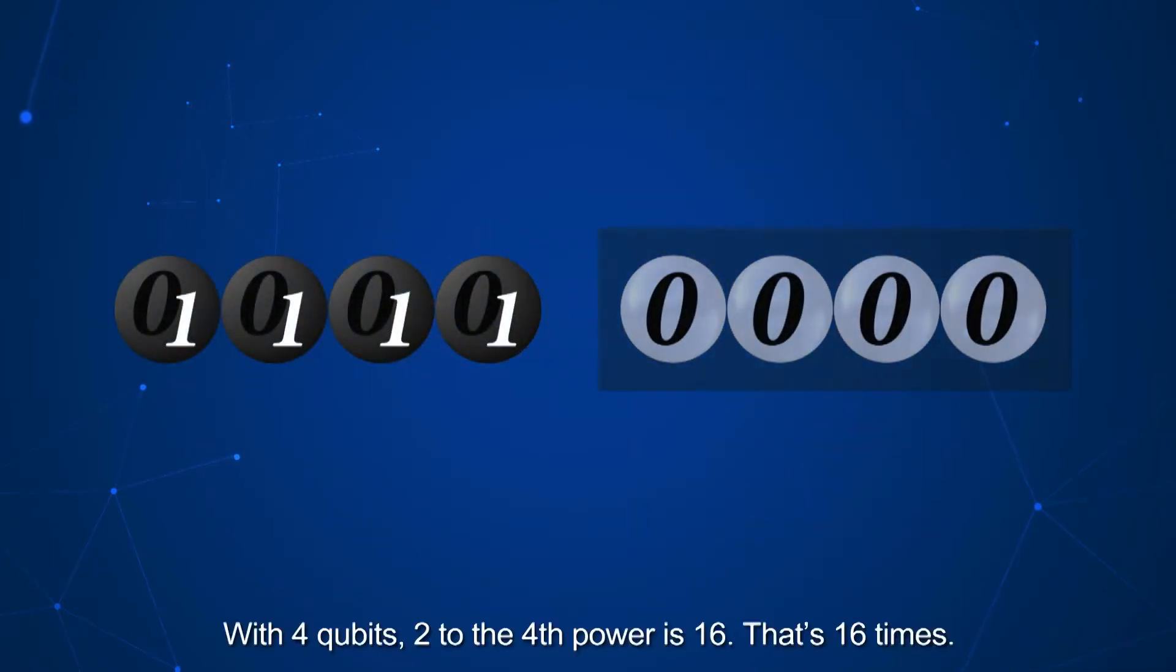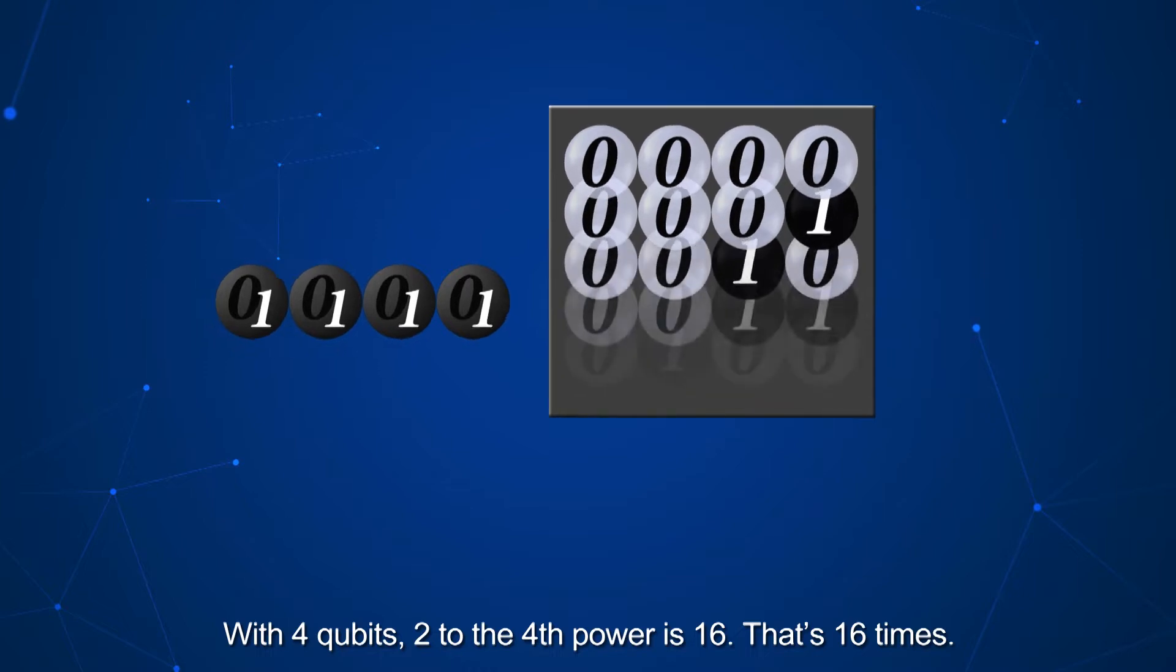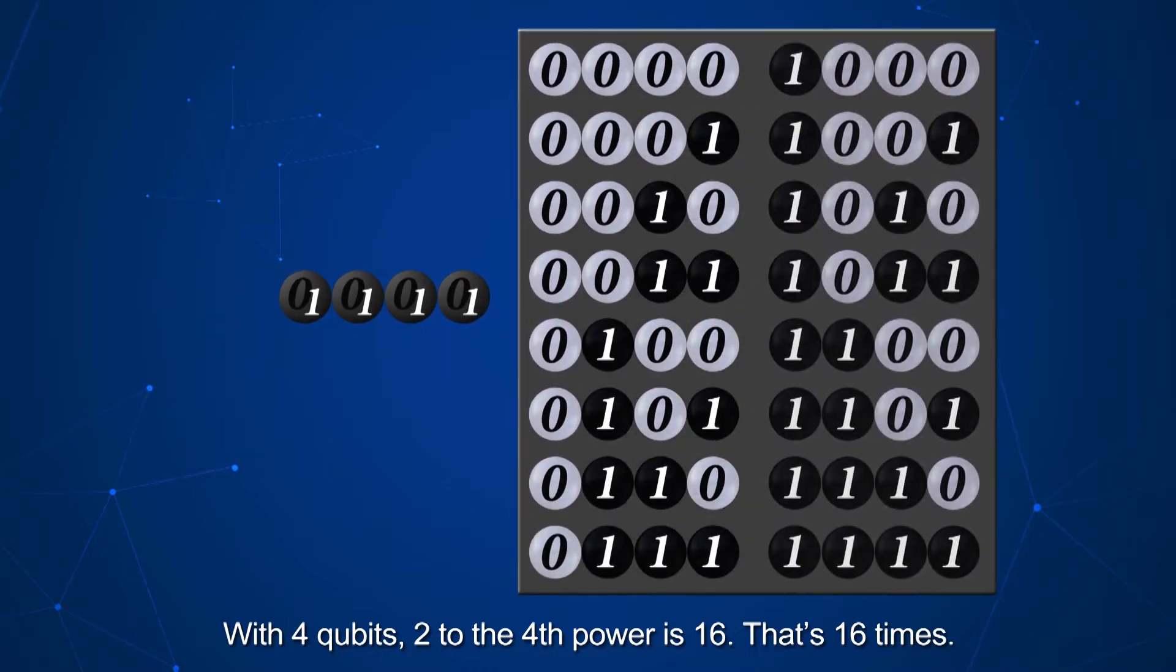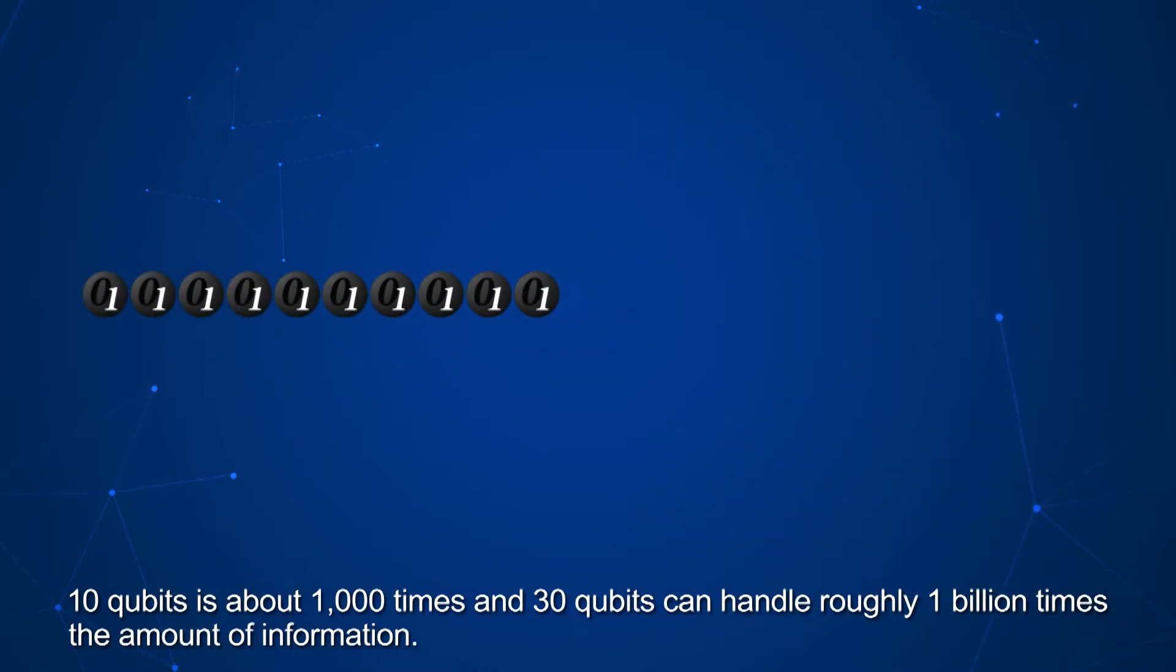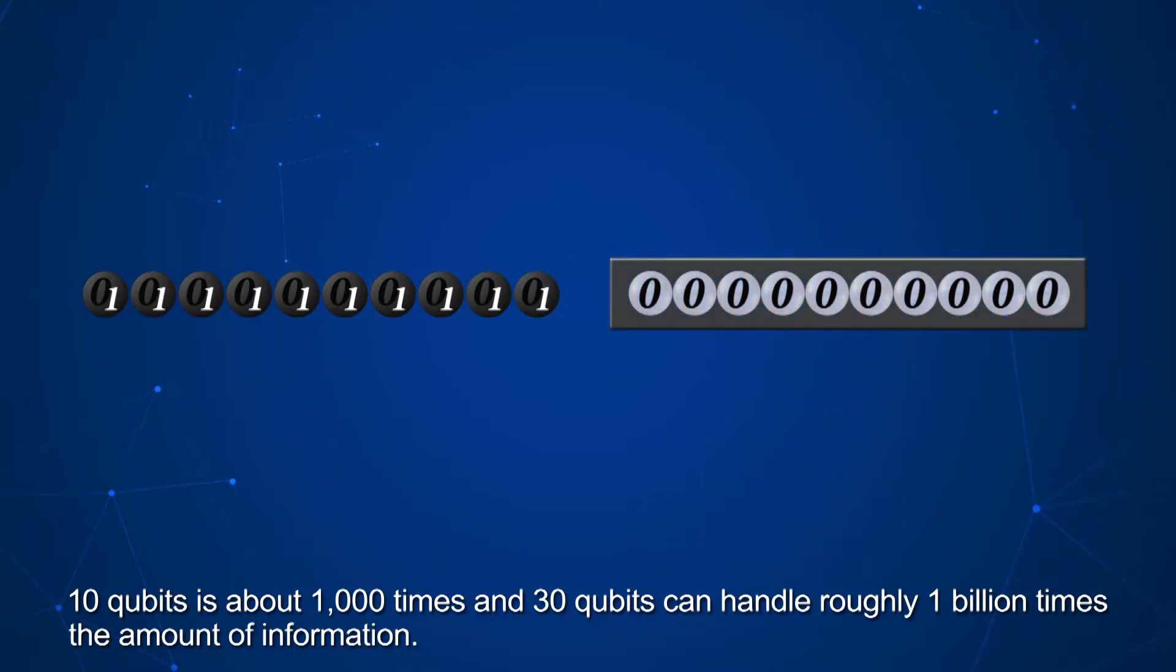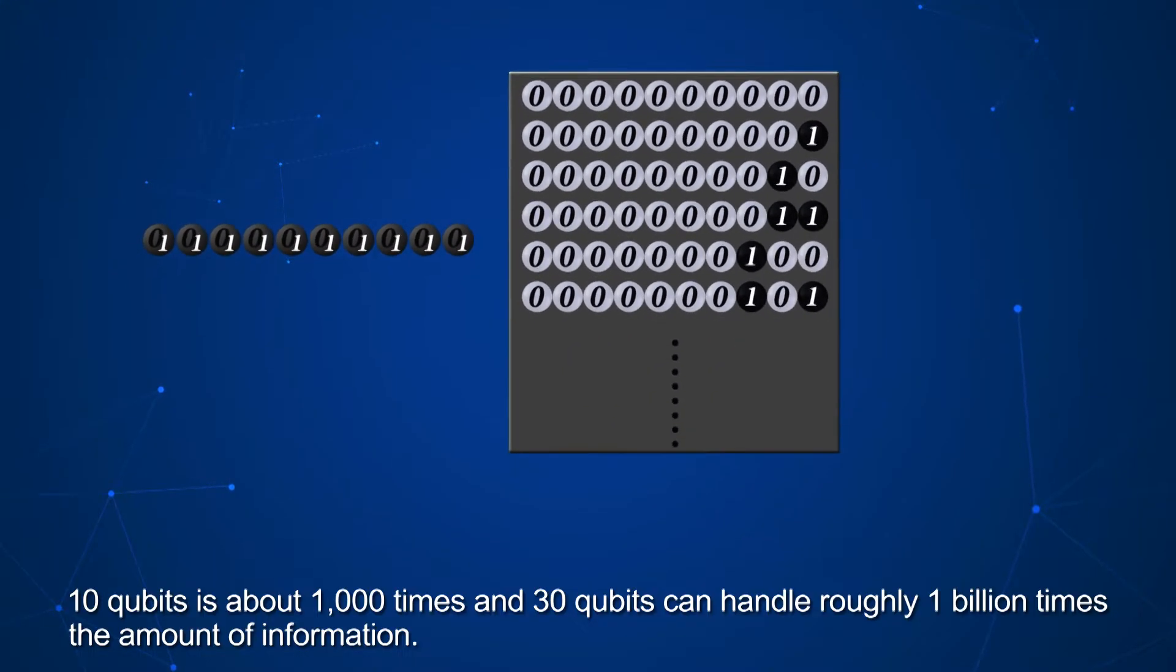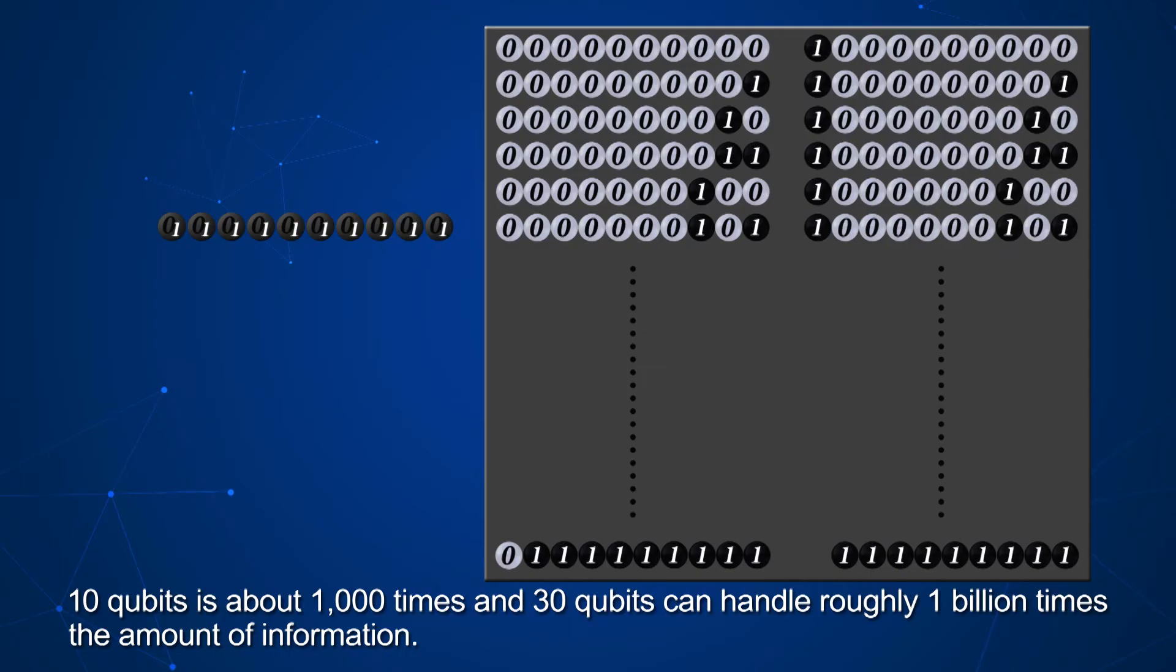With 4 qubits, 2 to the 4th power is 16. That's 16 times. 10 qubits is about 1,000 times, and 30 qubits can handle roughly 1 billion times the amount of information.